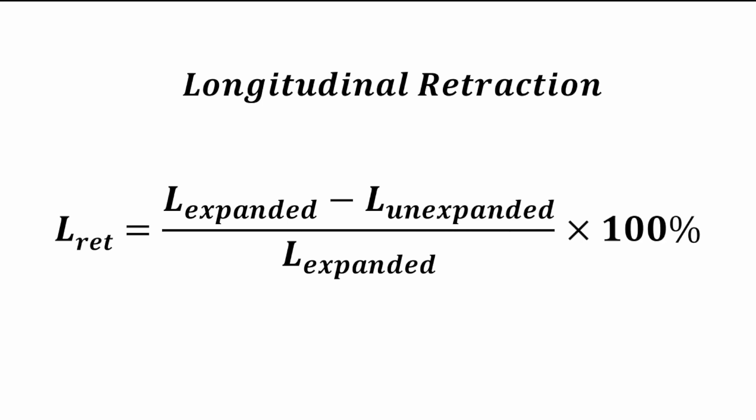The expression that we're going to use for calculating this longitudinal retraction is the length in the expanded state minus the unexpanded length divided by the expanded length times 100%. So this gives you a quantified value of what the longitudinal retraction would be. What you will find is that this will be a negative value because of the fact that there is a retraction, a reduction in length.